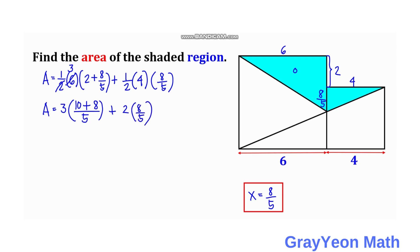This becomes 3 times 18 over 5, which is 54 over 5, plus 16 over 5 for the area. So area is equal to 54 plus 16, which is actually 70 divided by 5. So the area is actually 14 square units. And that is our answer.